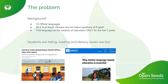Firstly, a bit about the problem we were facing and some background on South Africa. South Africa currently acknowledges 12 official languages, with various other languages not included as official languages, and 90.4% of South Africans are not native speakers of English — this includes myself and Hank.